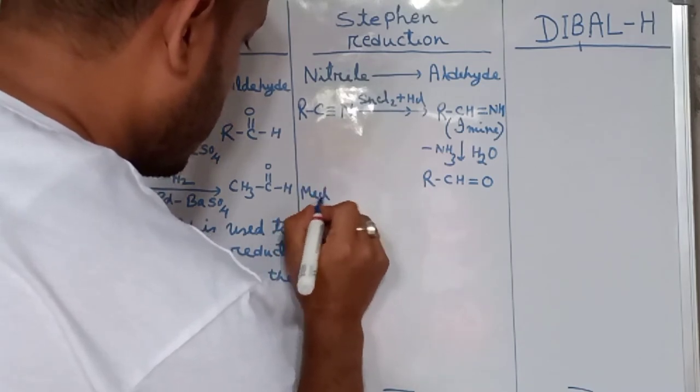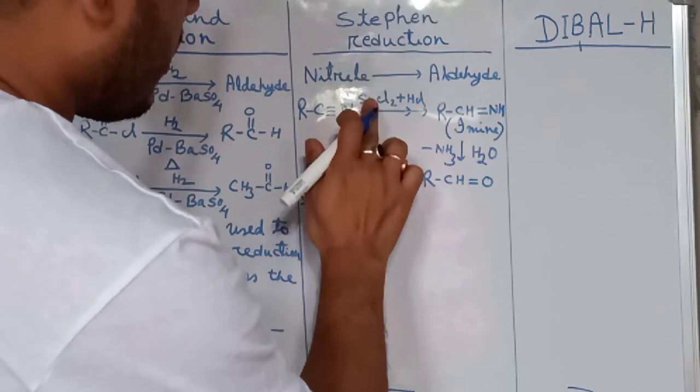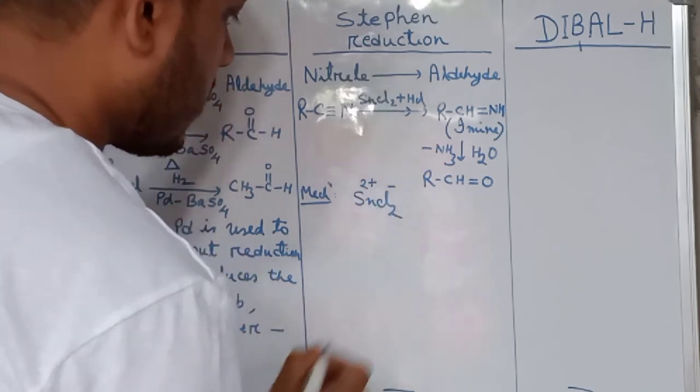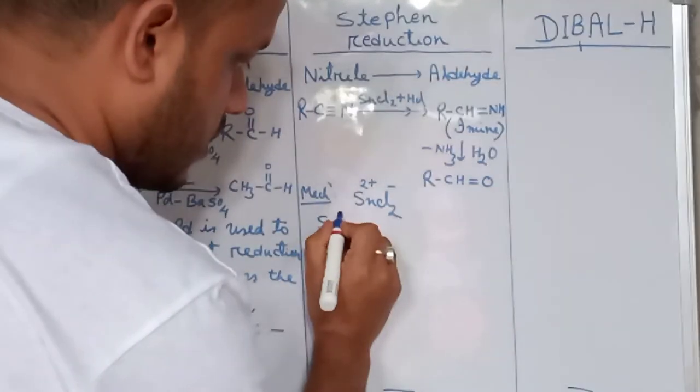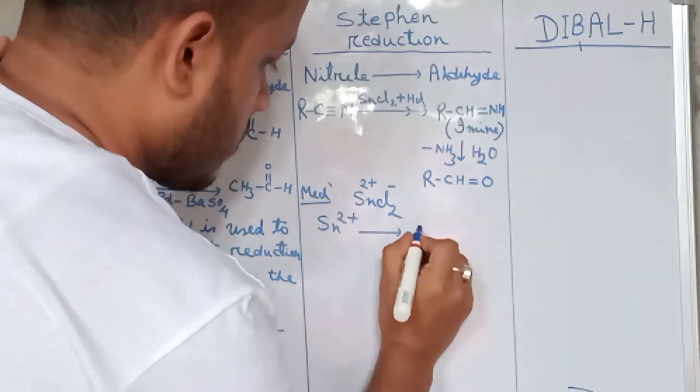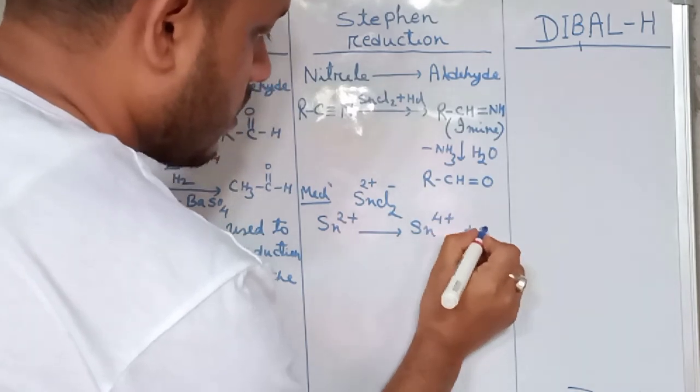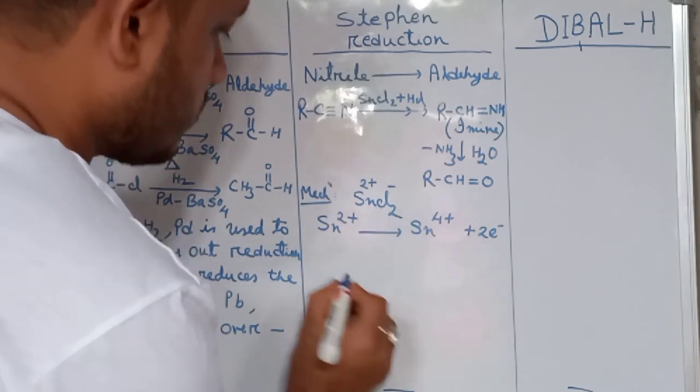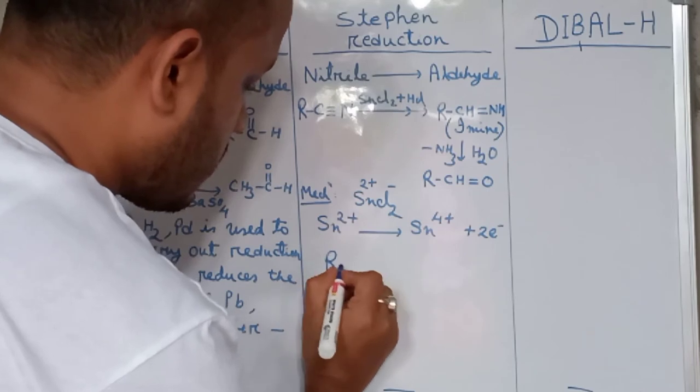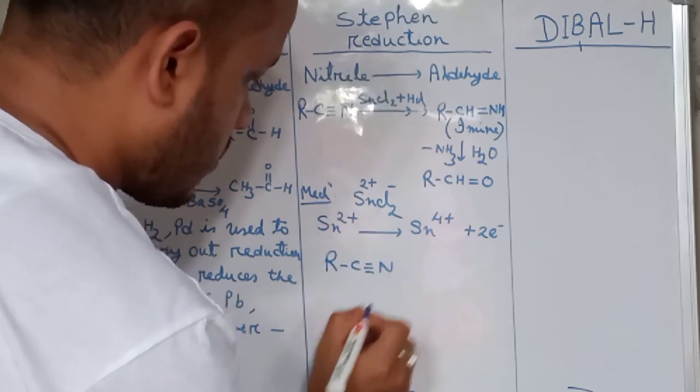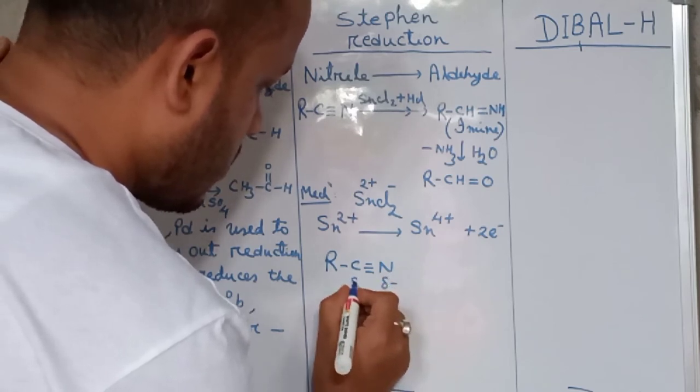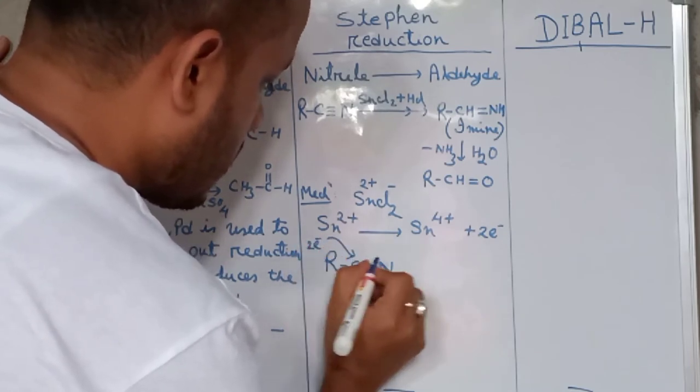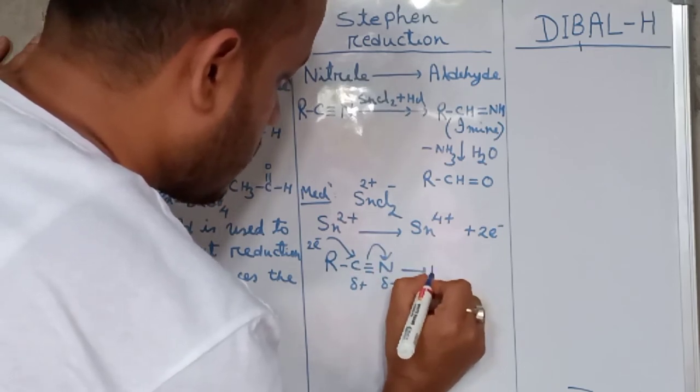Now see the mechanism. Here SnCl2 has Sn2+ and chloride minus. This Sn2+ donates 2 electrons to form Sn4+ plus 2 electrons. These 2 electrons attack the electrophilic carbon in nitrile. In nitrile, nitrogen is more electronegative than carbon, so these 2 electrons will attack this carbon.